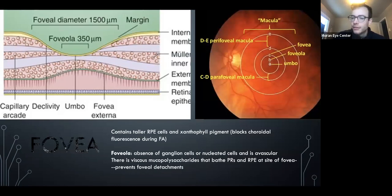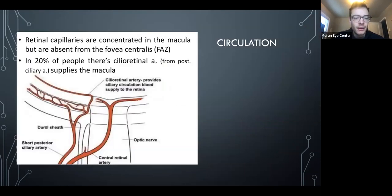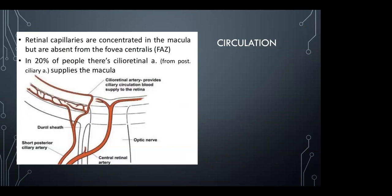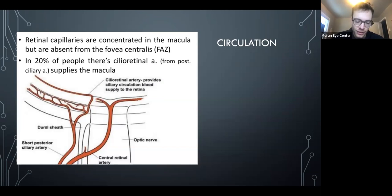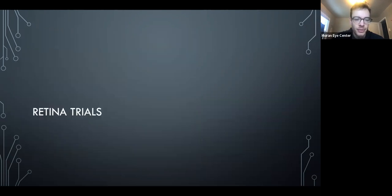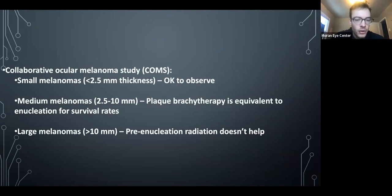Foveal anatomy and blood flow: the cilioretinal artery — present in about 20% of people — is why some patients retain central vision in a CRAO.